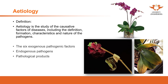It includes four aspects. They can be grouped into: the six exogenous pathogenic factors, endogenous pathogens, and pathological products. The last group uses 'others' because those pathogens belong to different categories, so we group them into others.